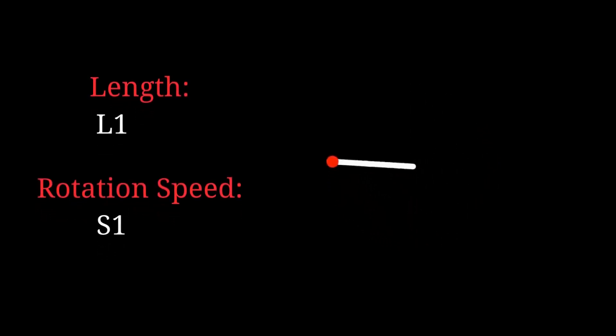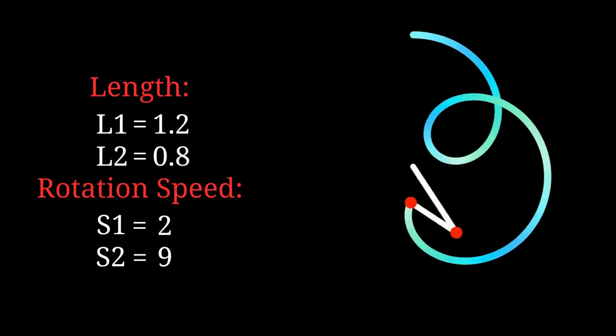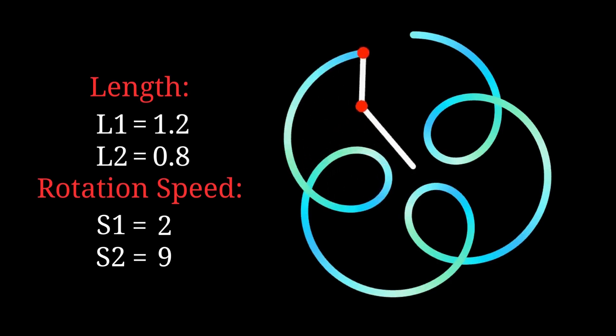This is a rotating axis with a length of L1 and a rotation speed of S1. A second axis is attached to it, with a length of L2 and a rotation speed of S2. When they rotate together, various patterns can be created with different parameters.